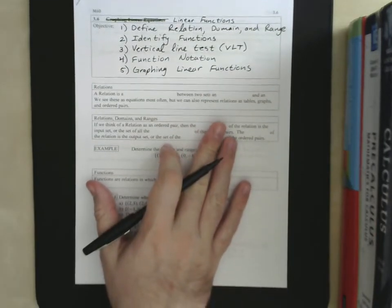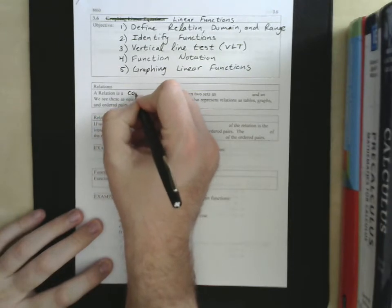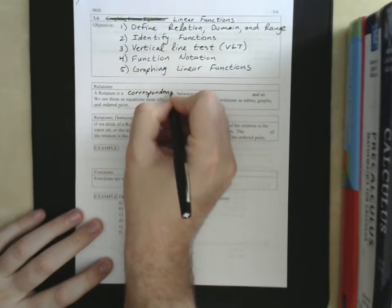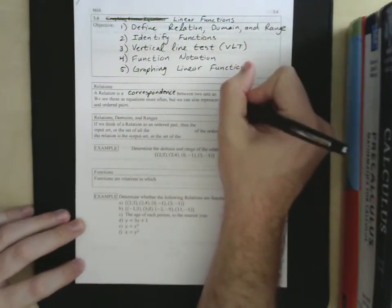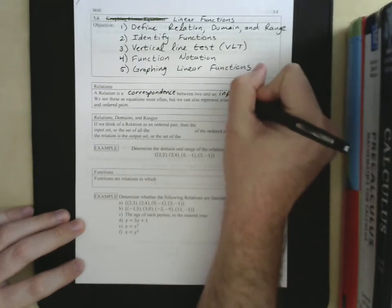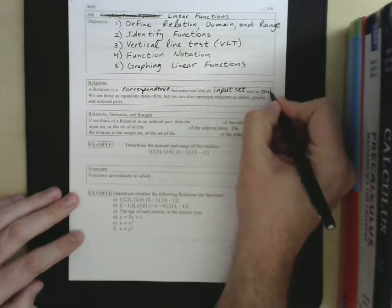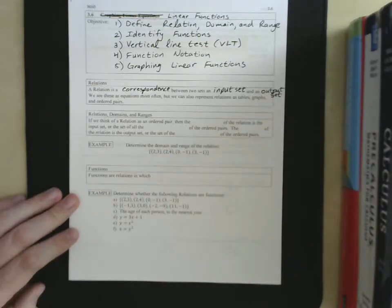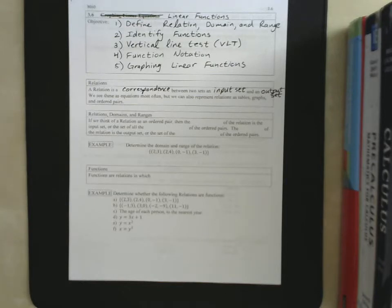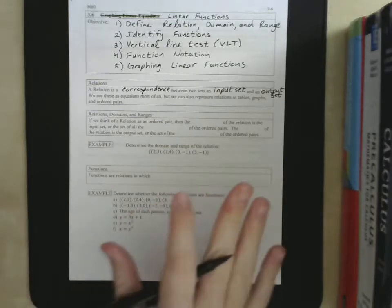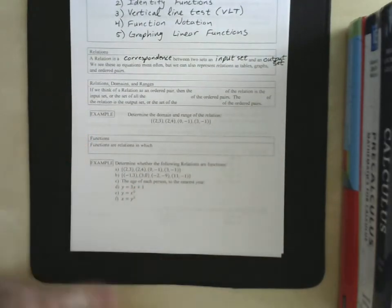Let's talk about what relations are. A relation is a correspondence between two sets. An input set and an output set. Did not leave enough space here. So, one set tells you the stuff that goes in, one set tells you the stuff that you get out. So, we see these as equations most often in this class, but we can also represent relations as tables, graphs, sets of ordered pairs, even.